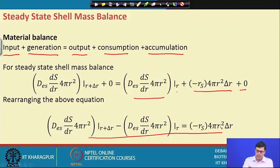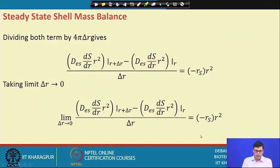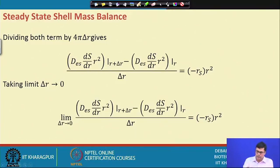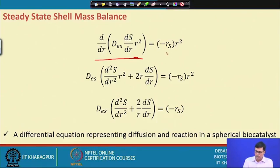After writing the material balance — rate of input plus generation equals output plus consumption plus accumulation — and dividing by 4π·δr, we arrive at a differential equation. As δr tends to 0, taking the limit gives us the steady-state mass balance differential equation for diffusion-reaction in a spherical catalyst.